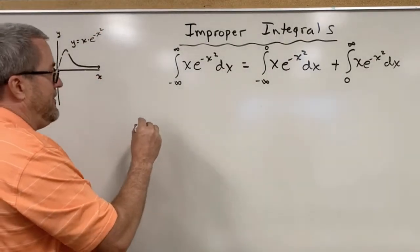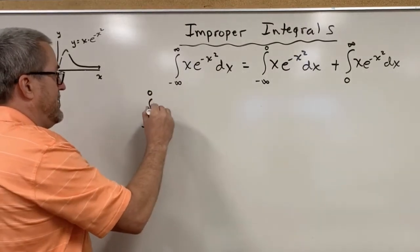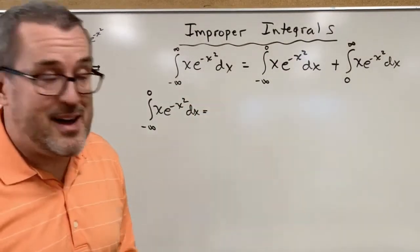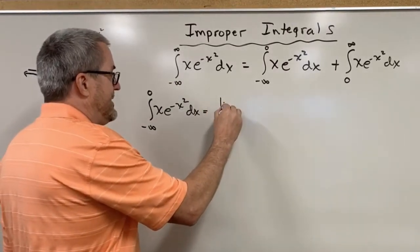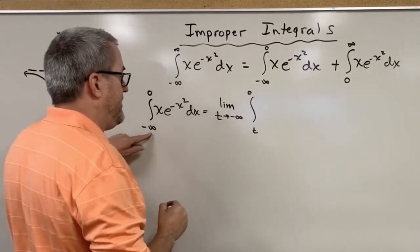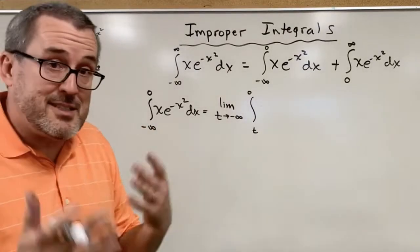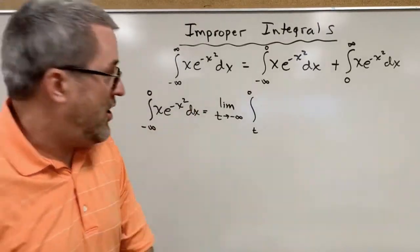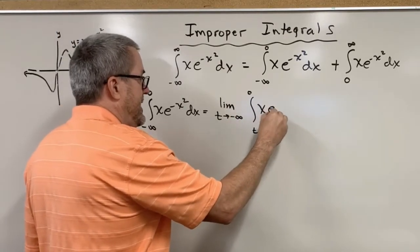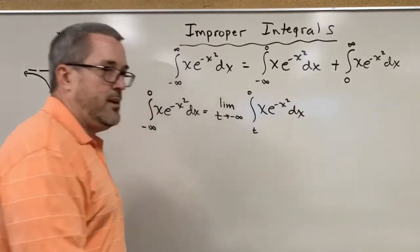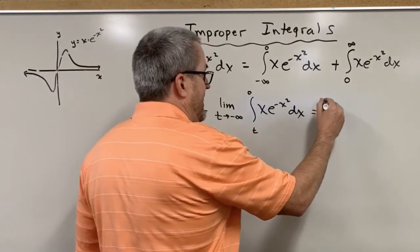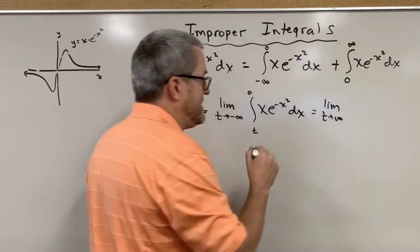Let's work on the left piece first: integrate from negative infinity to zero of x·e to the negative x squared dx. Using good notation to communicate mathematically well, we write this as the limit as t approaches negative infinity of the integral from t to zero of x·e to the negative x squared dx. That's just a way to say we have a limiting process at work, because we're accumulating area from negative infinity.